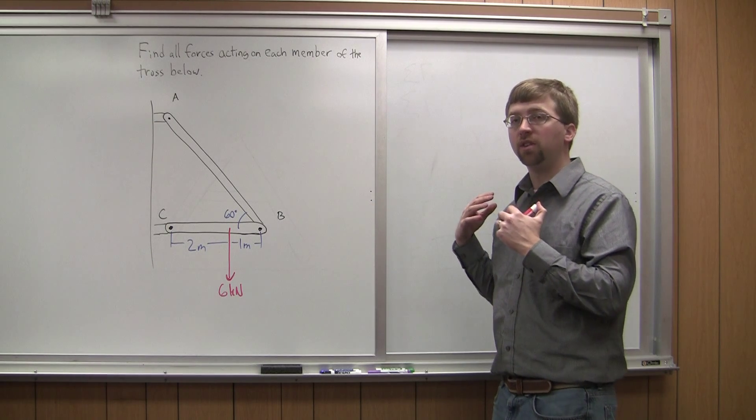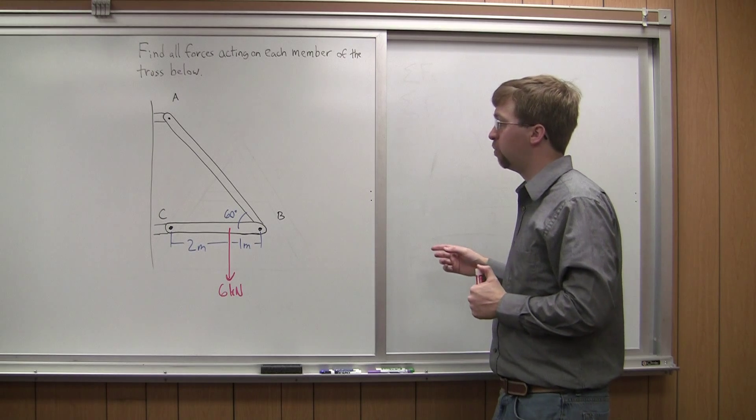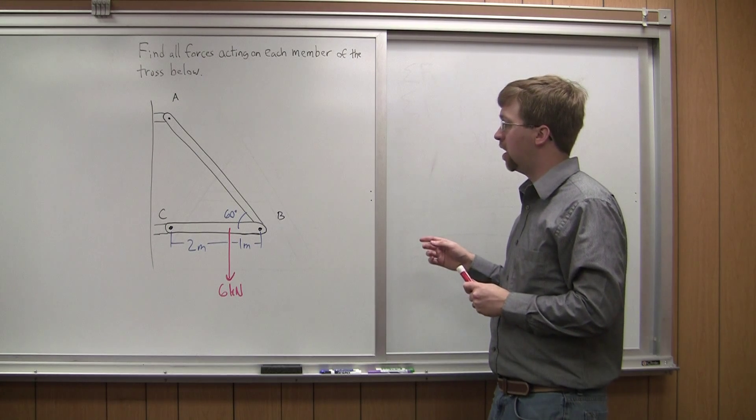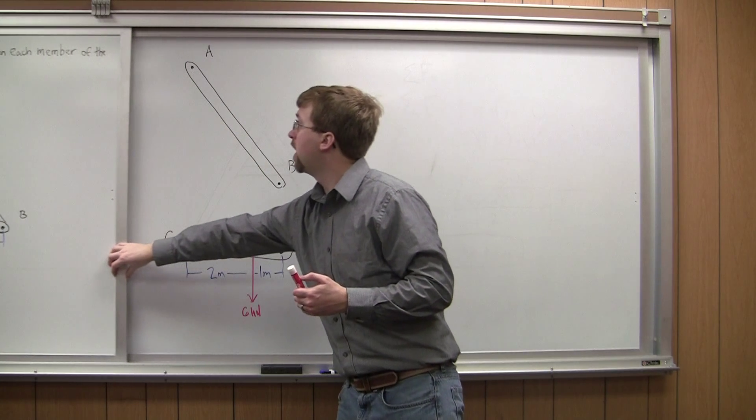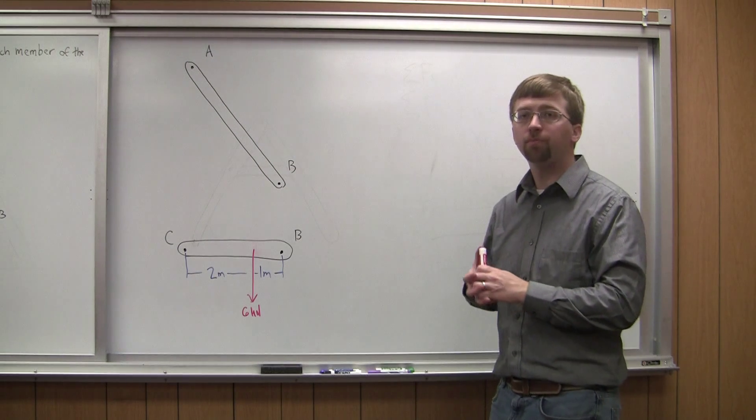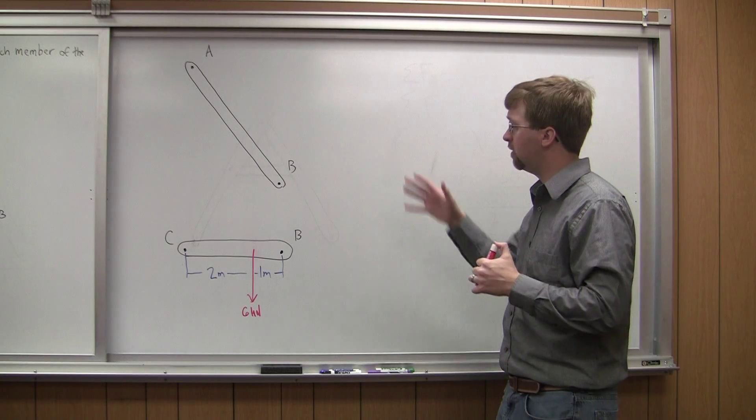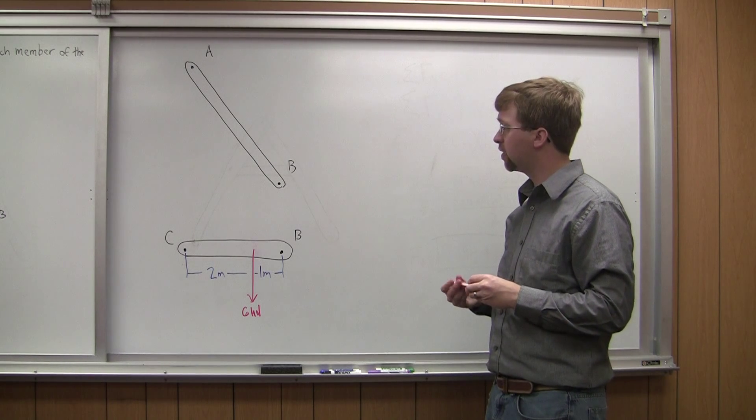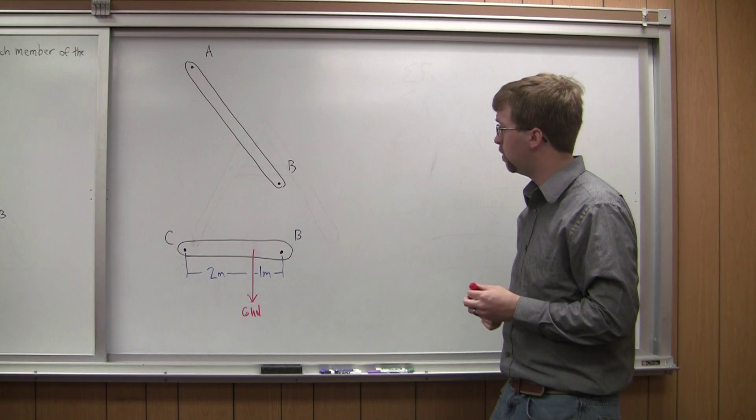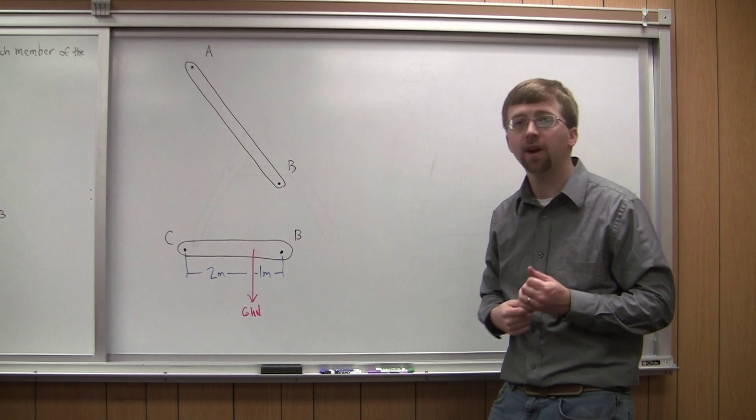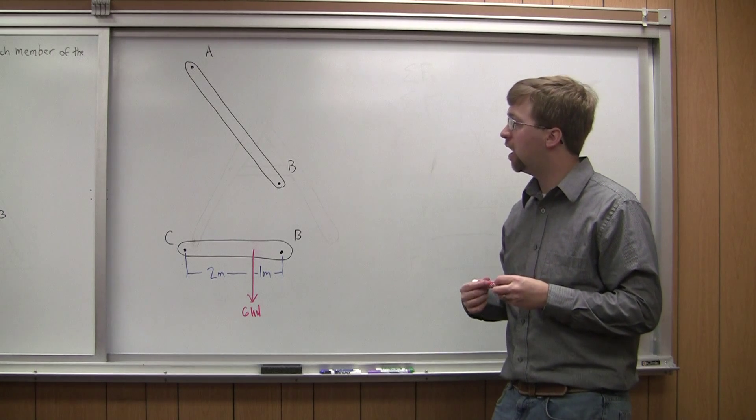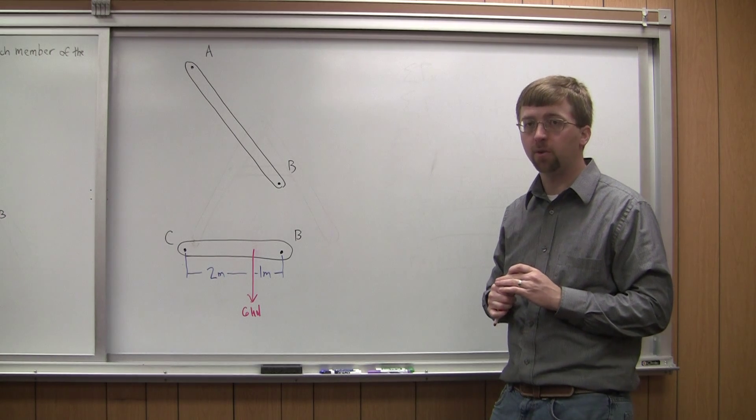We need to instead just break the whole thing apart and we're going to analyze it in pieces. So to do that we go ahead and we're going to break it apart. And I've drawn a free body diagram of the two pieces right here. We've got member AB and member CB right here. I've put the six kilonewton force already on member CB. Now we need to identify all the unknown forces.